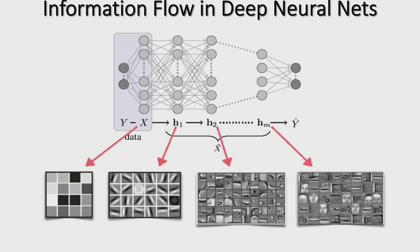Something interesting happens layer by layer to the representation of the data. Things start out in a highly non-linearly separable regime, and the topology of the representation changes significantly from layer to layer. Things which are close in Euclidean topology in the original input become very far apart in the last hidden layer, and vice versa. I'm really interested in the mathematics behind these topological transformations of the data.